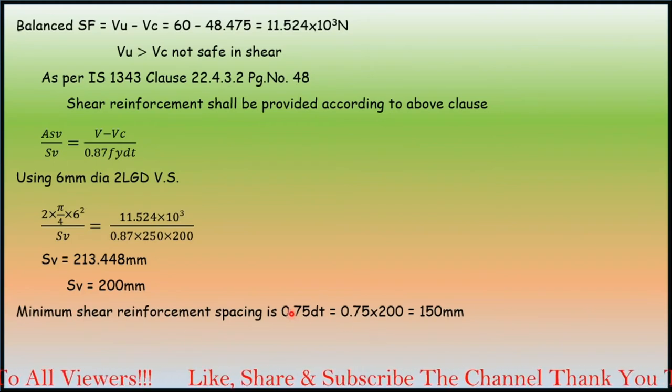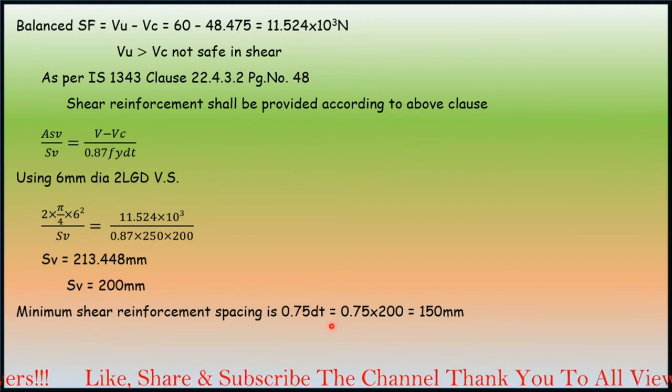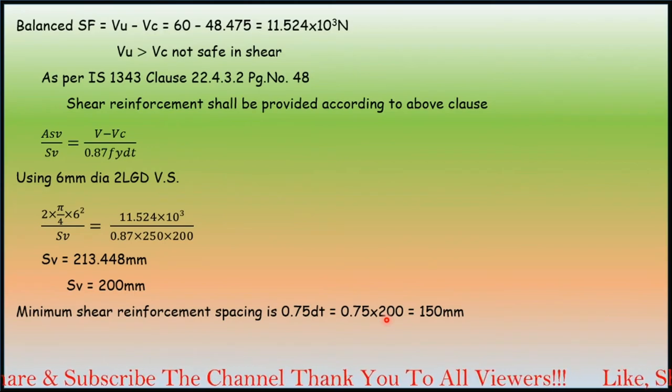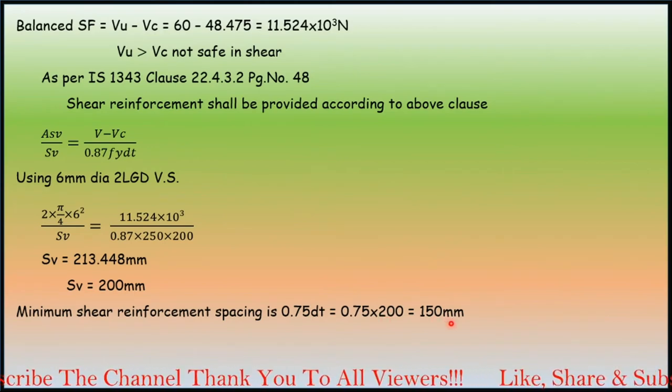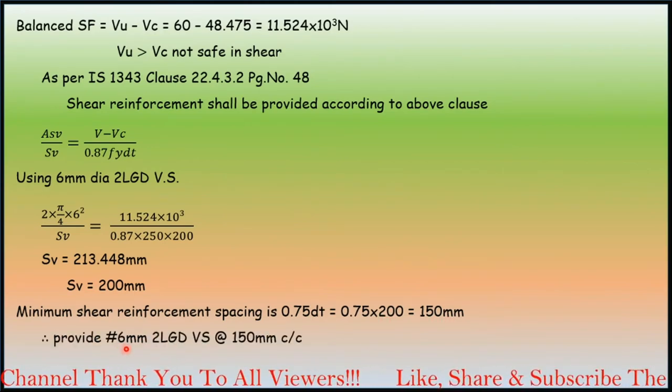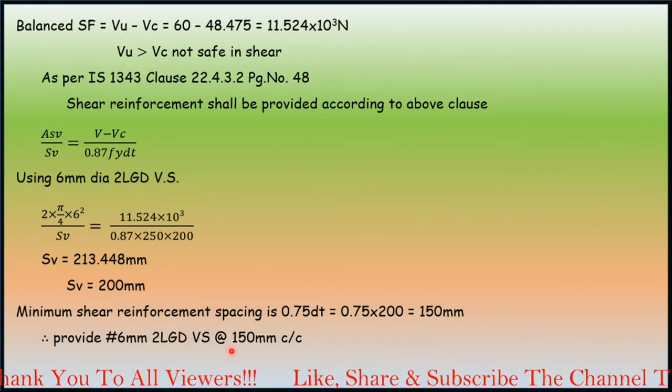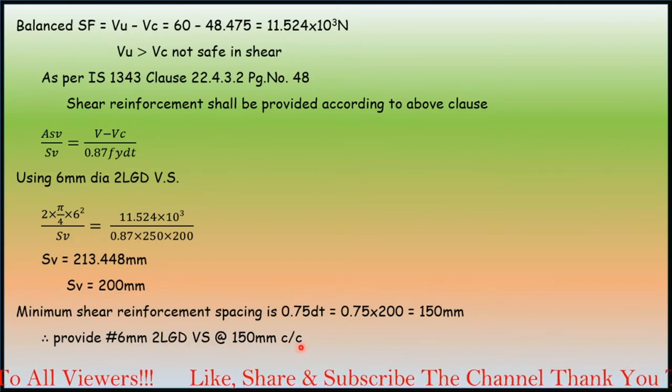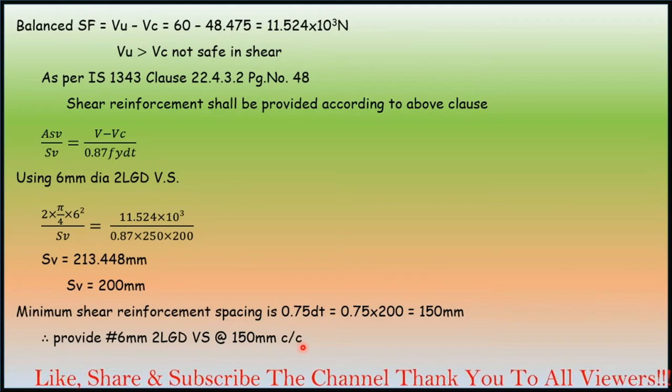Minimum shear reinforcement: again we have to check it as 0.75 times dt, that is 0.75 × 200 = 150 mm. So provide 6 mm two-legged vertical stirrups at 150 mm center to center at the end of the beam sections.